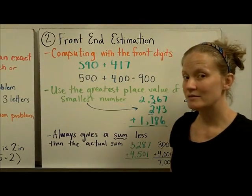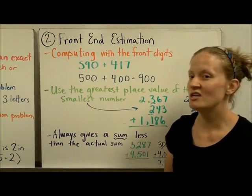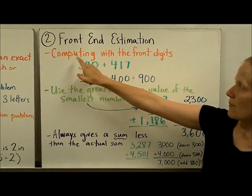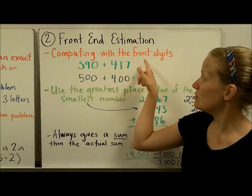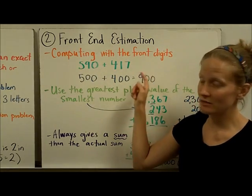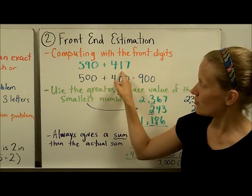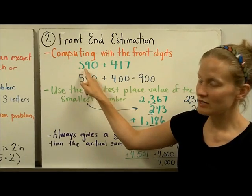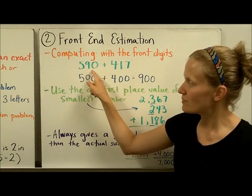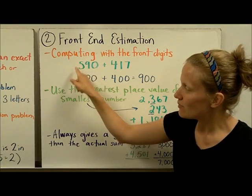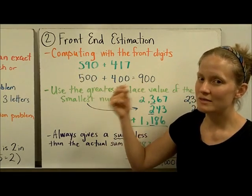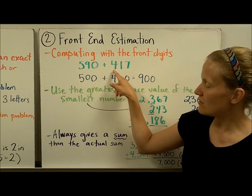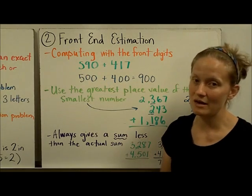A second way to estimate sums and differences is using front-end estimation. In my mind, this is kind of like easy rounding — it's similar. When you're doing front-end estimation, you're computing with the front digits. For example, with 590 plus 417, you just keep the first digits and turn everything else into zeros. You don't have to worry about whether adjacent digits bump it up or not — it's just a very quick way to add or subtract the numbers. So 590 changes to 500 and 417 goes to 400, and you add them up to get 900.